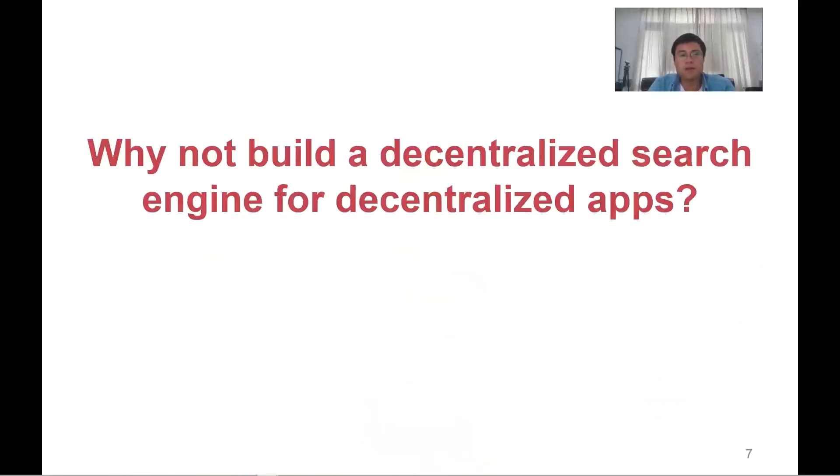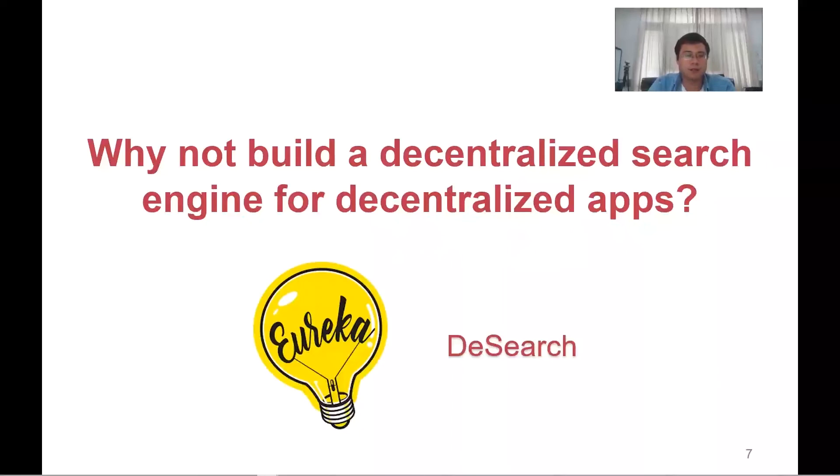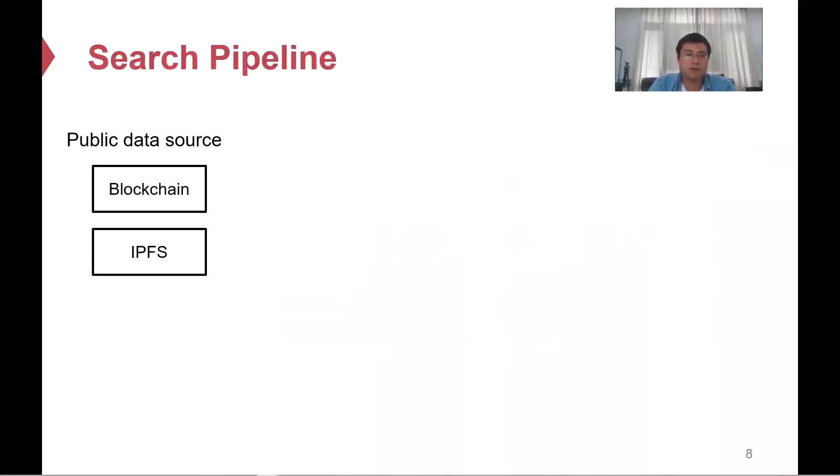So, why not build a decentralized search engine for these decentralized apps? This can be a solution. Here comes to our mind, D-Search. Before we introduce our D-Search system, let us recap a basic search pipeline. First of all, data are stored on a public blockchain or IPFS, a peer-to-peer file system. Both allow users to authenticate the data source.